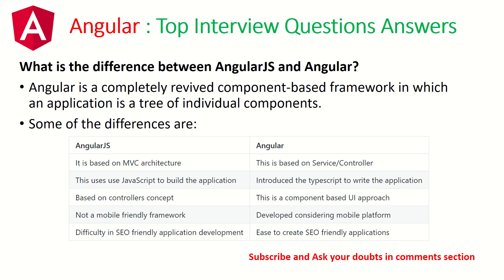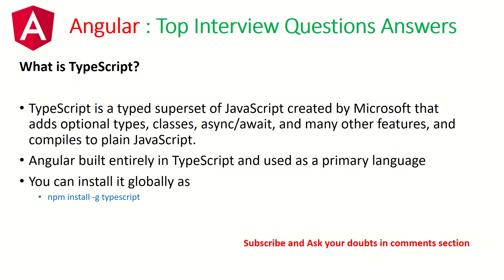AngularJS is based on the controllers concept; Angular is a component-based UI approach. AngularJS is not mobile-friendly, whereas Angular was developed considering mobile-first platform. With AngularJS it is difficult to have SEO-friendly application development, whereas with Angular it's easy to create SEO-friendly applications.